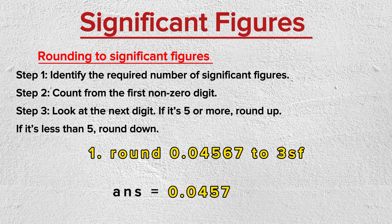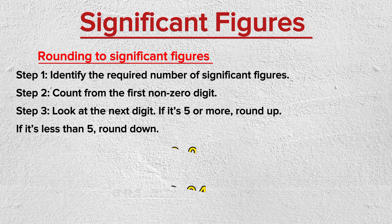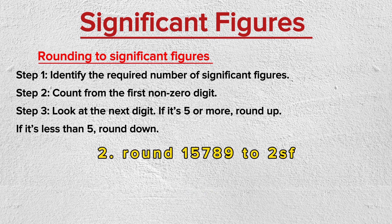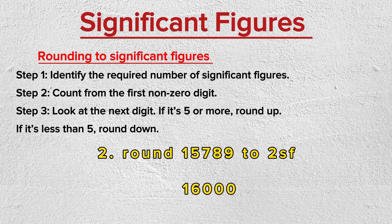The answer is 0.00457. Now for the next example: round 15789 to two significant figures. The first nonzero digit is 1, so we start counting from 1. The first two significant digits are 1 and 5, so we look to the right of 5. The digit is 7, which is greater than 5, so we round up 5, which becomes 6. Replace all the digits to the right with zeros — this is done if the number is a whole number. The answer is 16000.